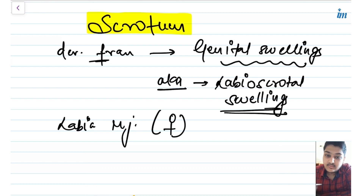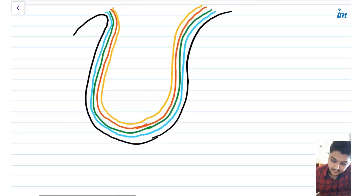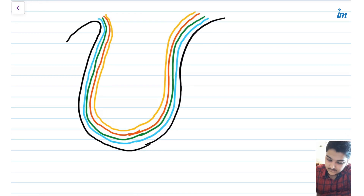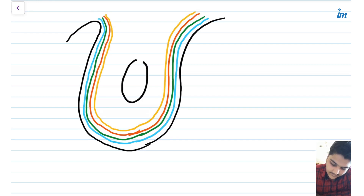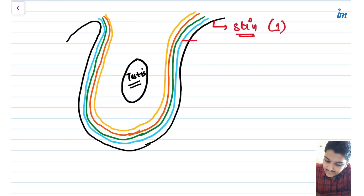That is why the scrotum is homologous to the labia majora. Now let's talk about the layers of the scrotum. From outer to inner, the scrotum is made up of five layers. Here we have the structure — suppose this is the scrotum with its five layers — and it contains the testes.